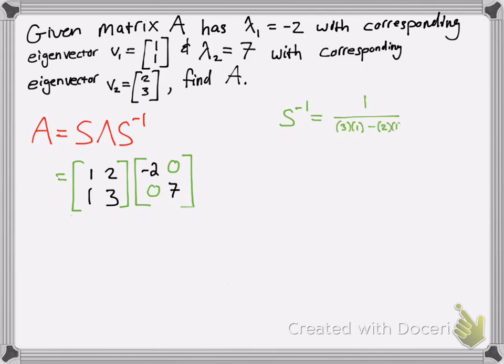So we have 1 over the determinant, which is 3 times 1 minus 2 times 1. Then we flip-flop the values around. That's just 1 over 1 times the modification of S, which gives us S inverse.